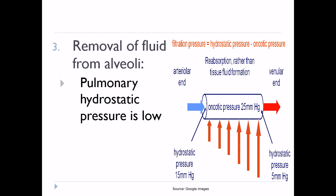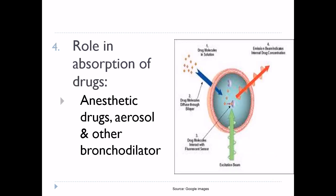Fourth function of pulmonary circulation: role in the absorption of drugs. Certain drugs can rapidly pass through the alveolar capillary barrier by diffusion when administered by inhalation, for example, anesthetic drugs, aerosols, and other bronchodilators.